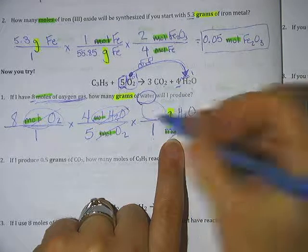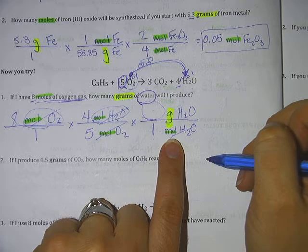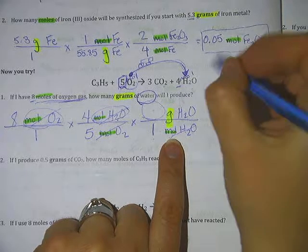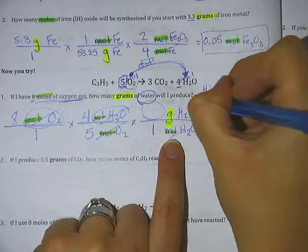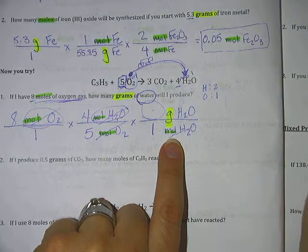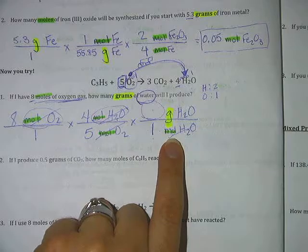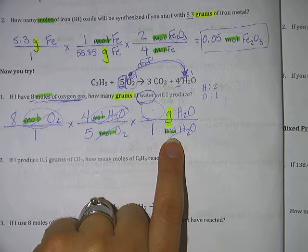Where do your grams come from? The periodic table. So for water, you're going to have to add up H2O. You're going to have to add those up. I'm going to give you a moment. Check your periodic table. Add up H2O.